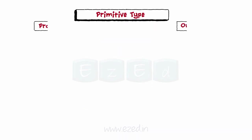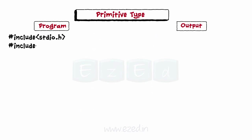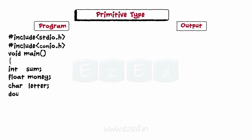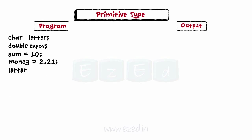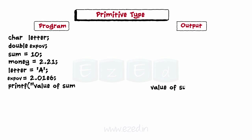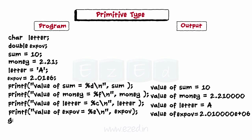Let's write a program explaining the use of primitive data types. We start by declaring the main function, followed by the type and name of variables — int, float, char, and double. We initialize the value of sum to an integer value 10, money to floating point value 2.21, letter to the character 'A', and expo to an exponential value of 2.01e6. Then we print those values and examine the output.